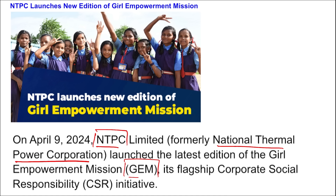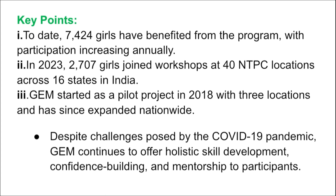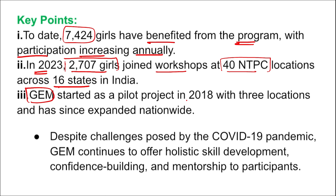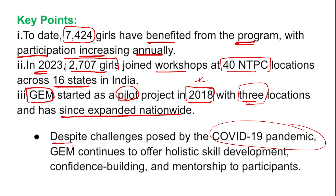Till date, 7,424 girls have been benefited from this program, with participation increasing annually. In 2023, 2,707 girls joined workshops at 40 NTPC locations across 16 states in India. The Girl Empowerment Mission started as a pilot project in 2018 with three locations and has since expanded nationwide. Despite challenges during the COVID-19 pandemic, the Girl Empowerment Mission continued to offer various skills so that girls can become job-ready.